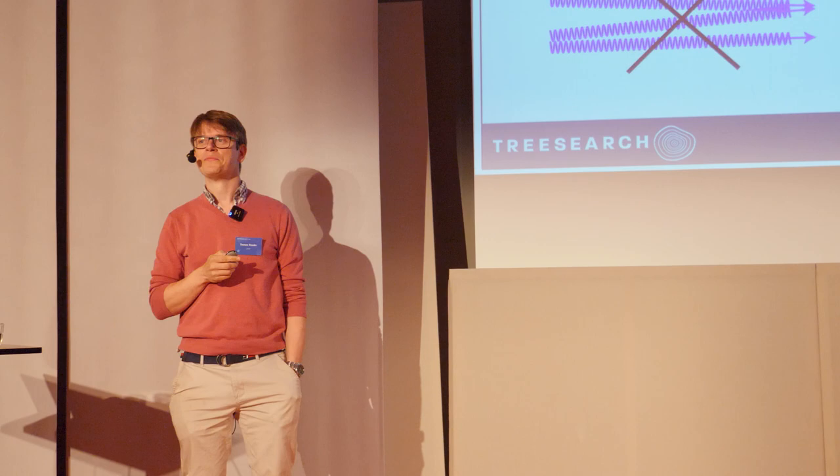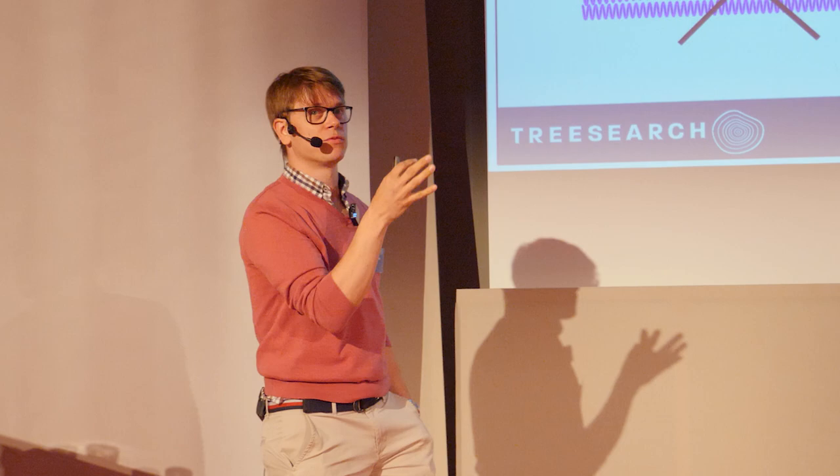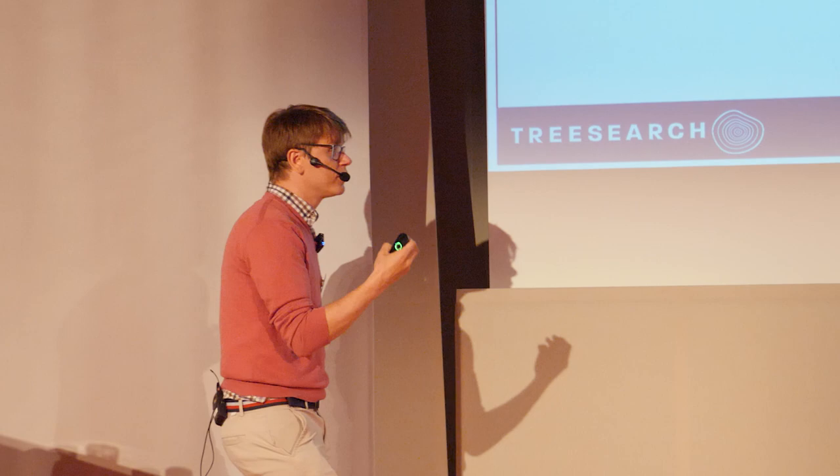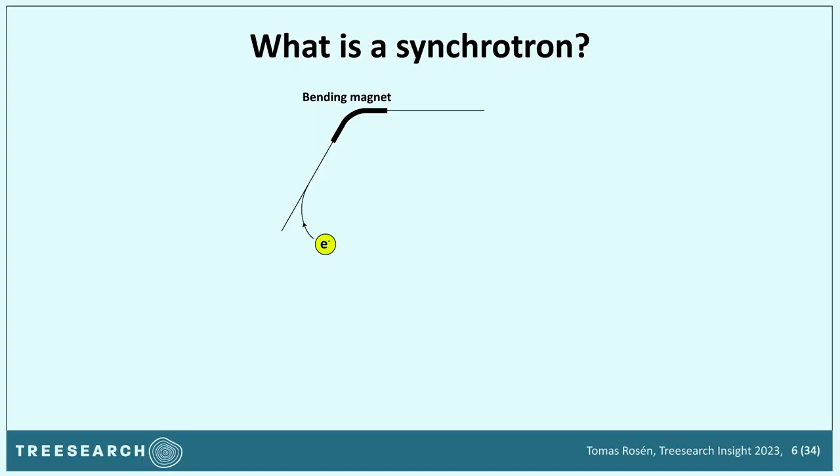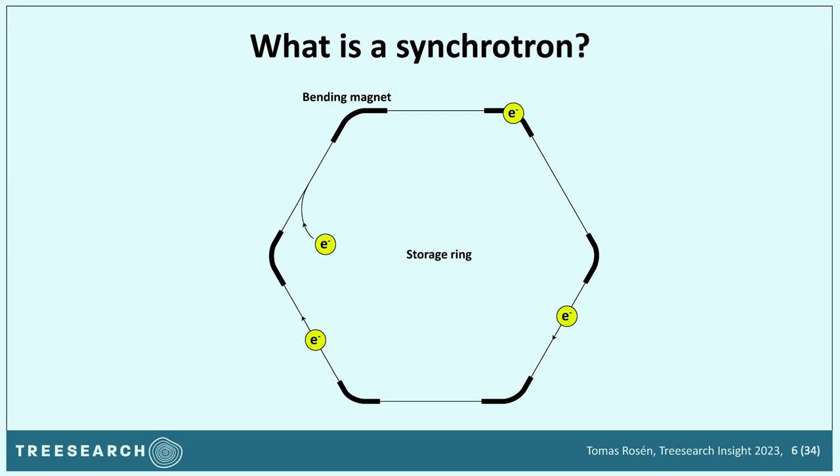And you can probably see where this is going — such X-rays are generated at synchrotron facilities. These are huge buildings built to create X-rays like this; it's not like a laser pointer you can put in your pocket. The basic principle: you accelerate electrons to almost the speed of light, and change their trajectory by applying magnetic fields through bending magnets. You can put them in a loop and store these super-fast electrons going around in a ring — a storage ring.